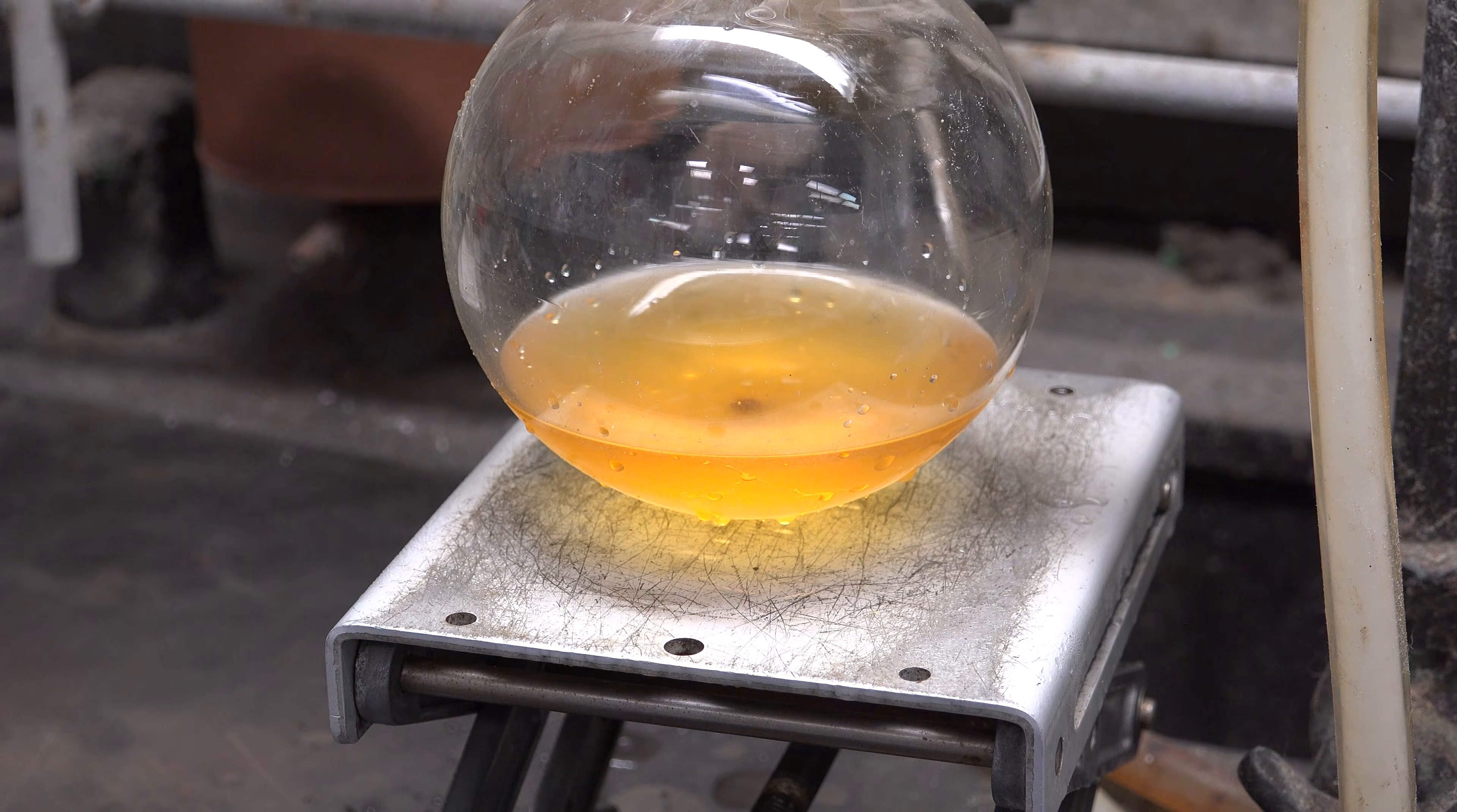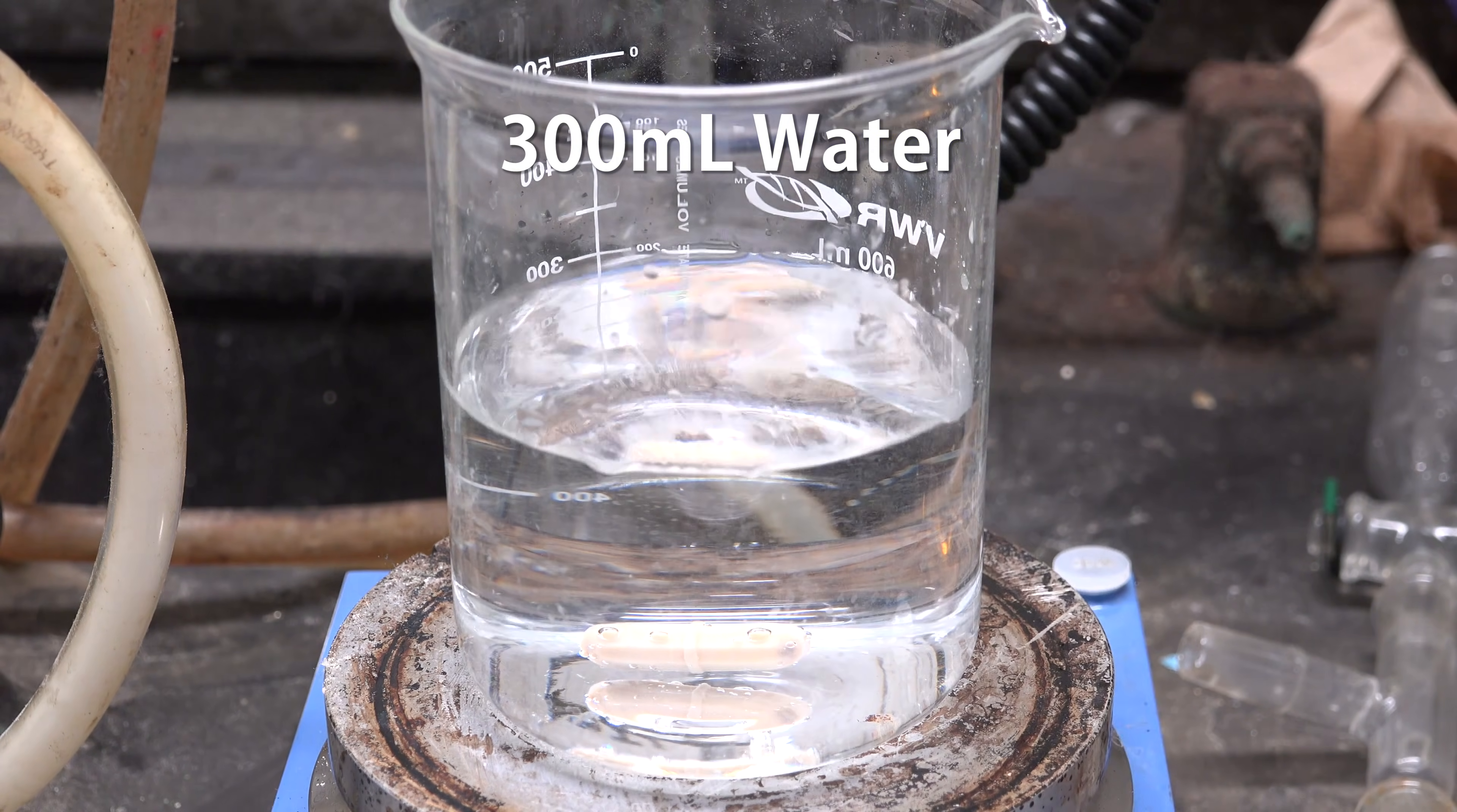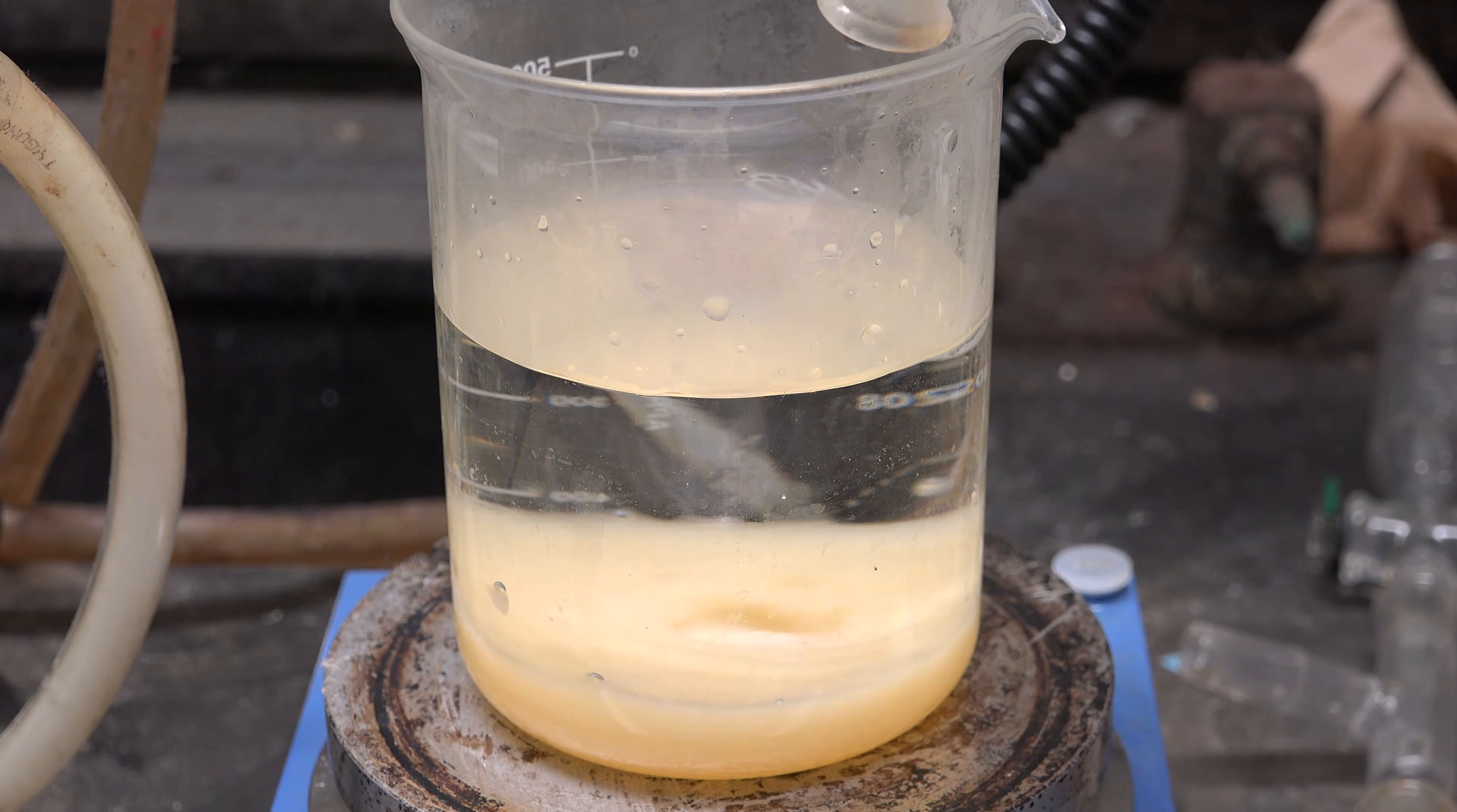And there we have it, crude bromoethane. It should be clear but we have bromine contamination as well. To purify it, we first get about 300 mL of water and directly add our crude bromoethane. Bromoethane is denser than water so it sinks to the bottom.